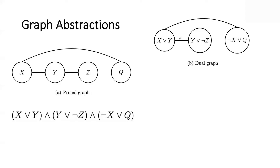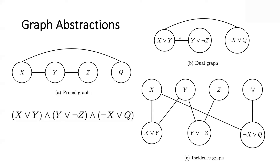There is a third type of graph abstraction known as the incidence graph. It includes both kinds of representations — it's a bipartite graph with two layers. One layer has nodes representing variables, and another layer has nodes representing clauses. There is an edge from a variable to a clause if that variable appears in that particular clause. So we have primal, dual, and incidence.